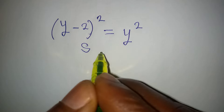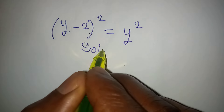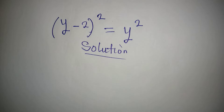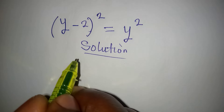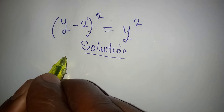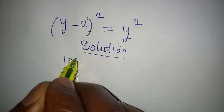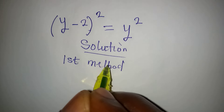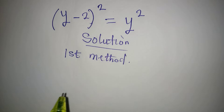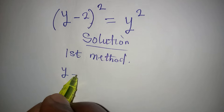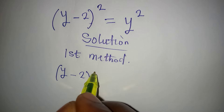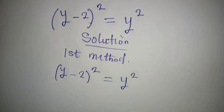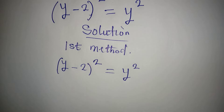Hello everyone, let's provide the solution to this problem, and I want to do it in two ways. Let's look at the first method. So we have (y minus 2) squared equal to y squared.